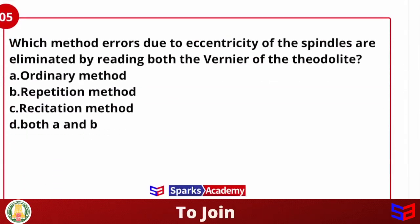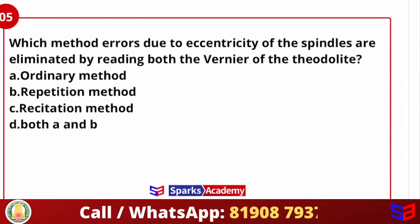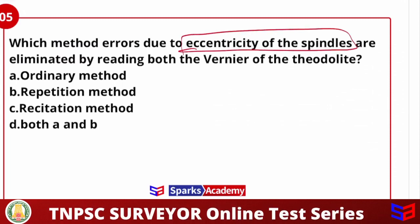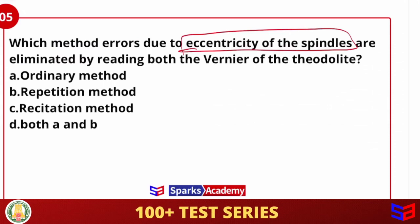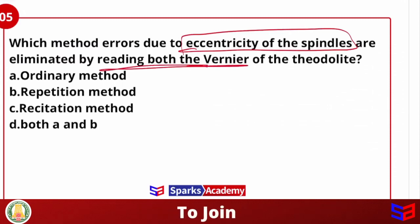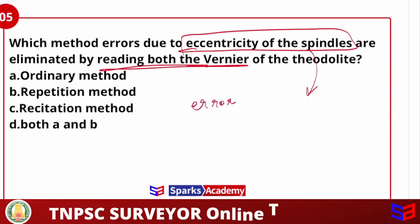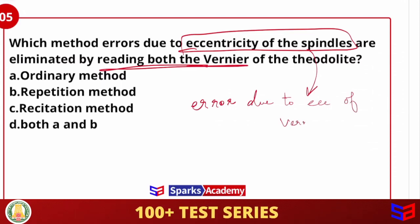Which method eliminates errors due to eccentricity of spindles by reading both verniers of the theodolite? Errors due to eccentricity of spindles and eccentricity of verniers are removed in this basic method. If I read both verniers, I can remove these two errors using the ordinary method.